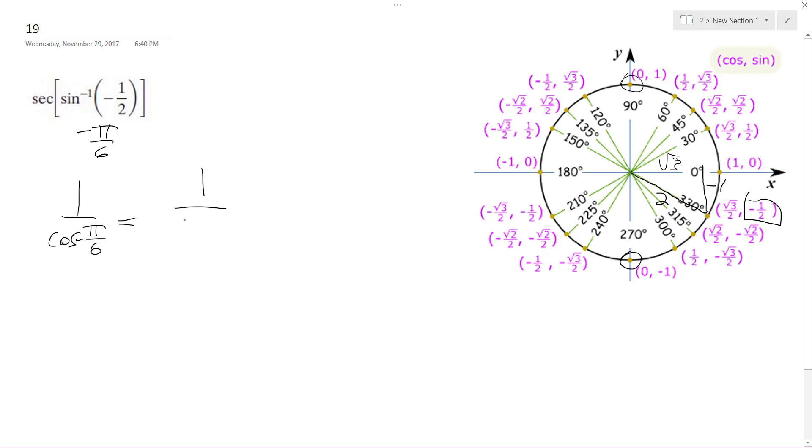That's root three, one over root three over two, which becomes two over root three.